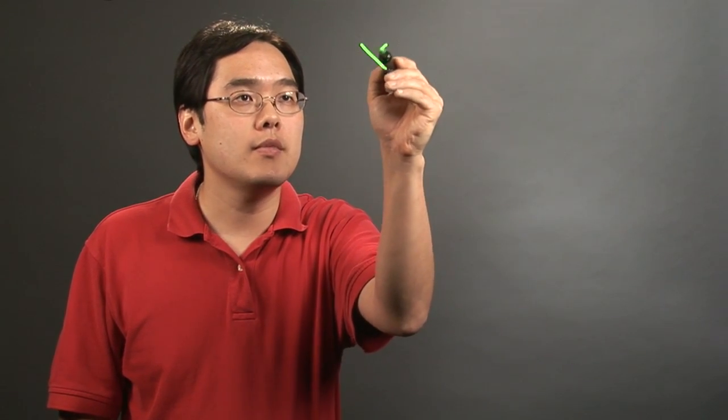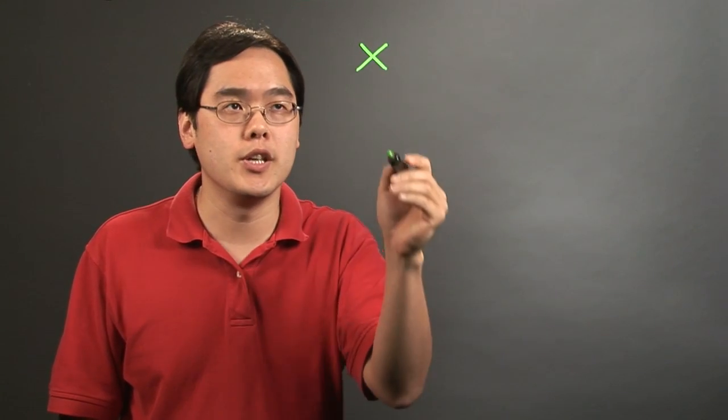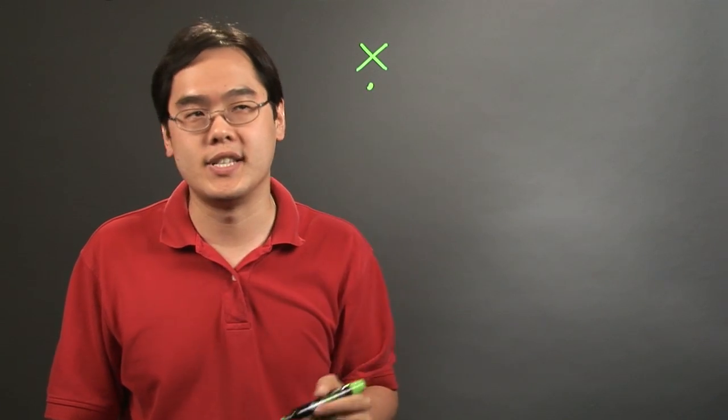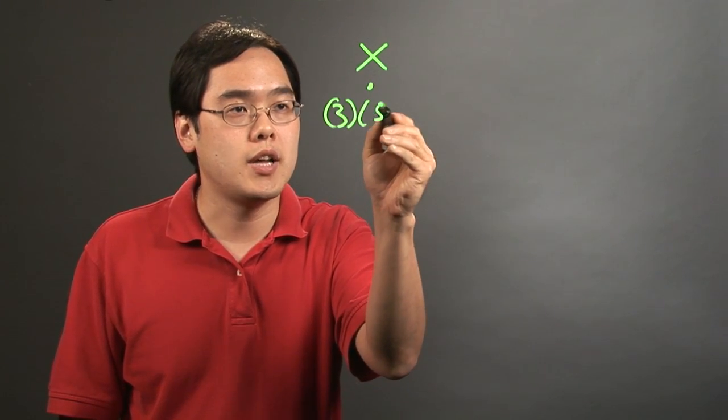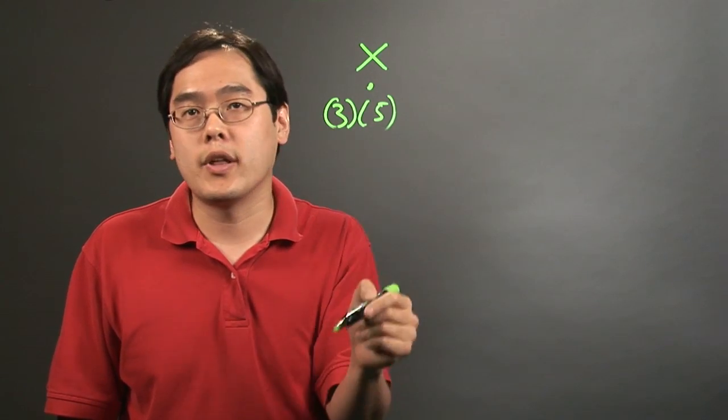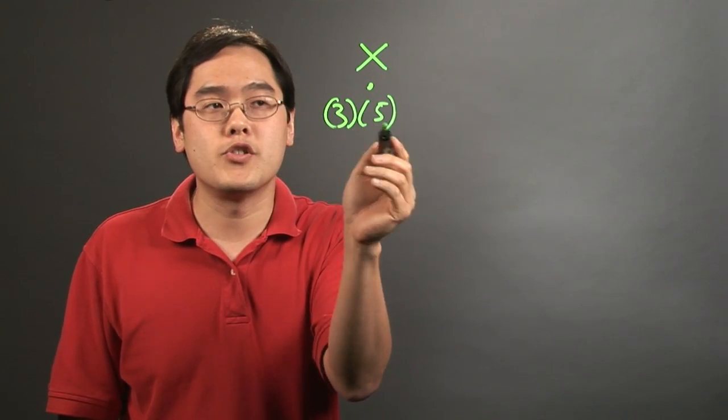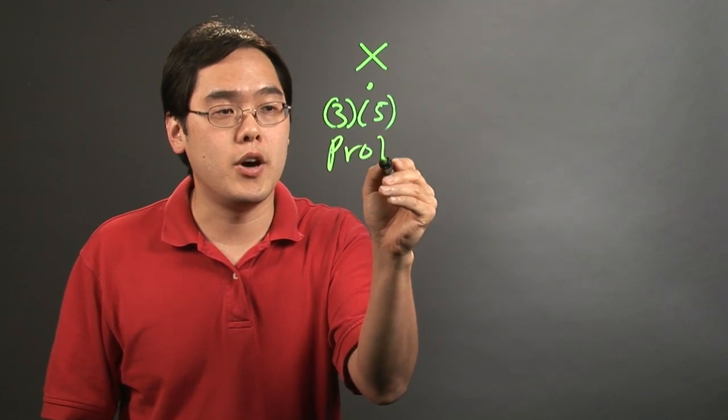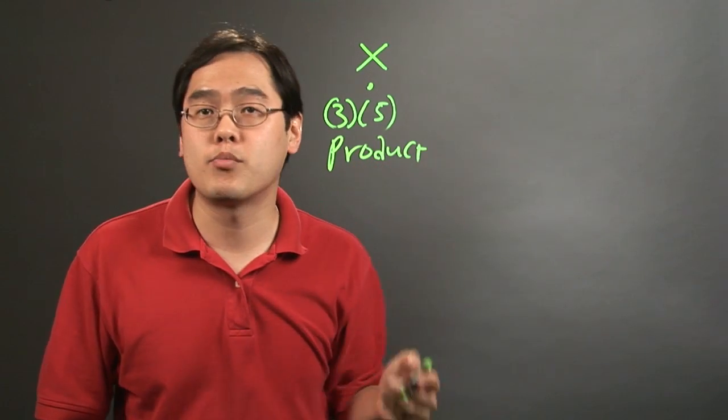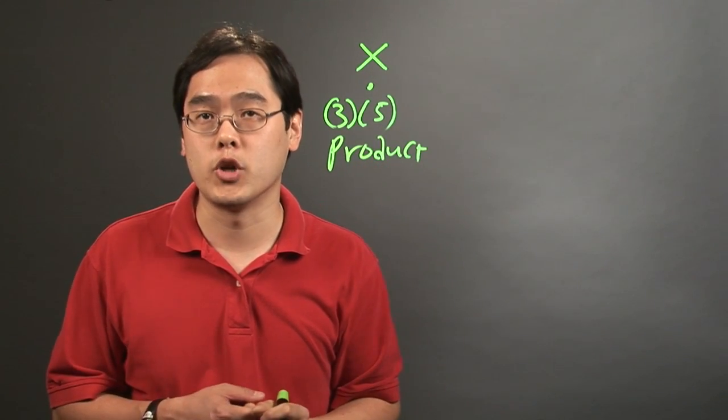Sometimes the multiplication symbol is going to be used, or they might use that of a dot. If you see things like 3 times 5 with no symbol at all and the numbers are just next to each other, that tells you it's a multiplication problem. They may also use the word product because product is a code word for multiplication.